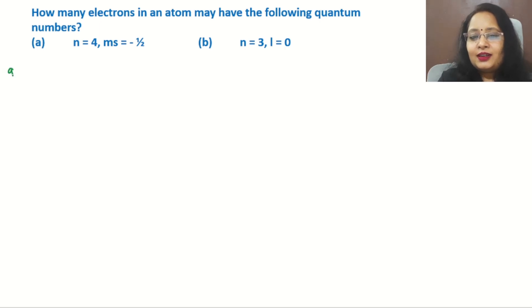Part A: n=4. From this we can find the value of L according to the formula: 0 to n-1. So here, 0 to 4-1 equals 0 to 3. Our values of L should be 0, 1, 2, and 3.